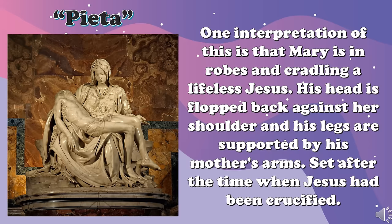One of Michelangelo's best-known works is The Pieta, and the other one is David, which were sculpted before he turned 30 years old. The picture shows The Pieta. One interpretation of this is that Mary is in robes and cradling a lifeless Jesus Christ. His head is flopped back against her shoulder, and his legs are supported by his mother's arms. This was set after the time when Jesus had been crucified.